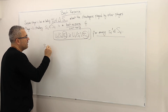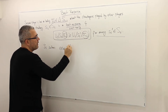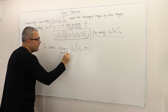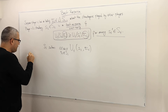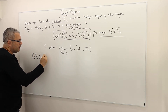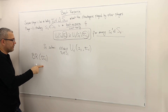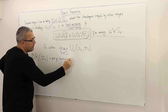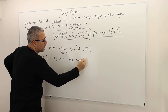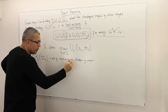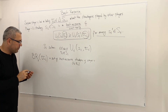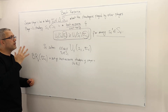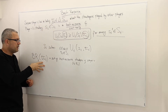Basically, si solves this maximization problem: maximize utility of si given sigma minus-i, by choosing si in the strategy set Si. If sigma minus-i is the belief of player i about the other player's strategy, we call this set the set of best response strategies of player i — the best response to sigma minus-i. Because if you change sigma minus-i, clearly this set may change. So therefore, this set should also rely on sigma minus-i.